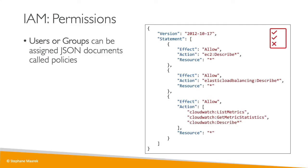It looks just like this. You don't have to be a programmer — this is not programming. It's just describing in plain English what a user or group is allowed to do. In this example, we can see that we allow people to use the EC2 service and do describe on it, to use the Elastic Load Balancing service and do describe on it, and to use CloudWatch. Through this JSON document, we are allowing our users to use some services in AWS.